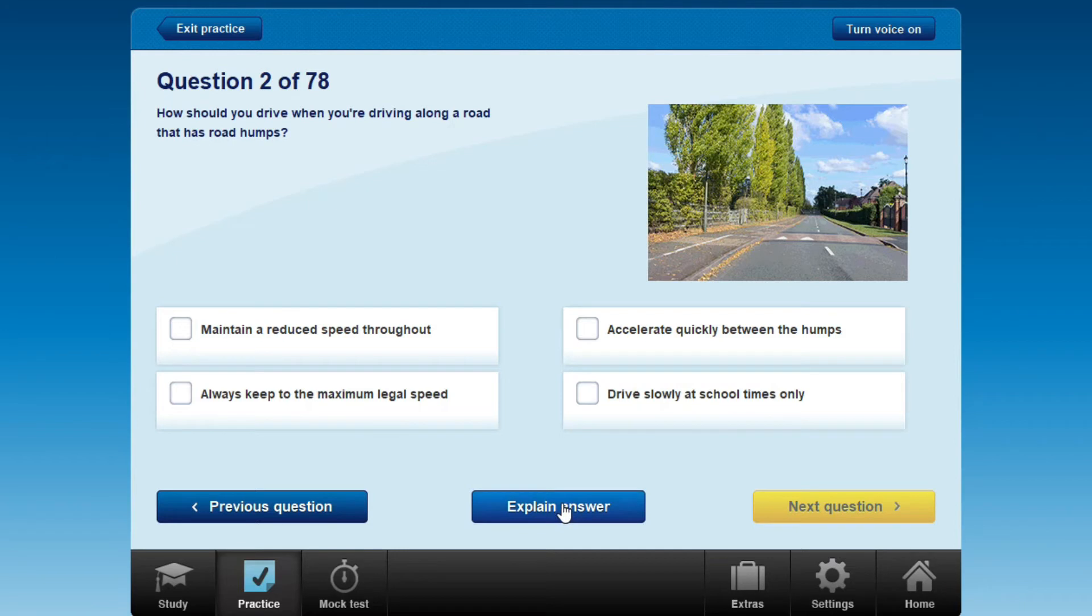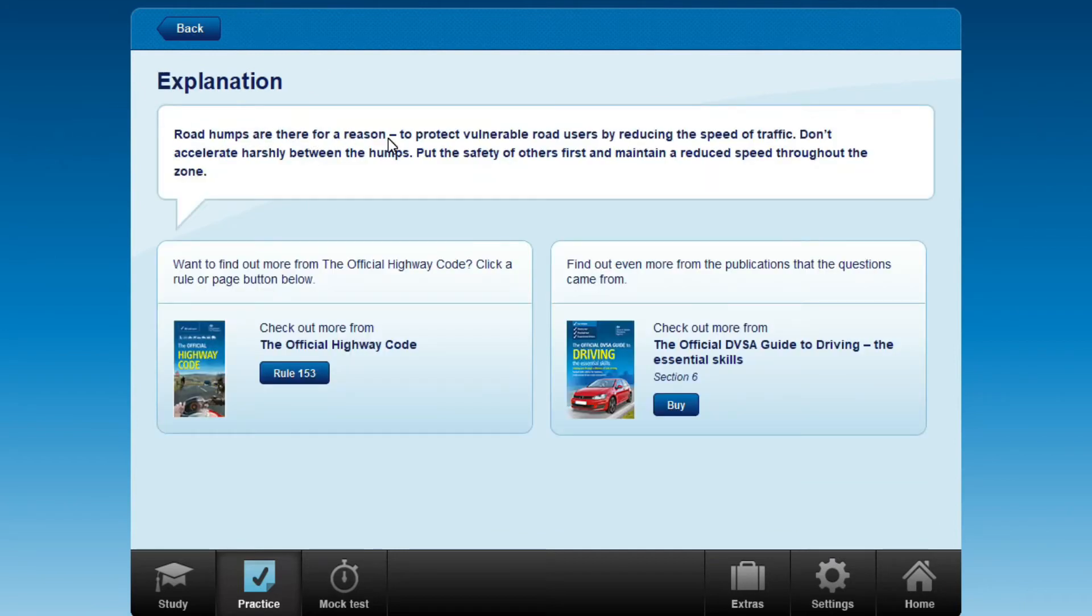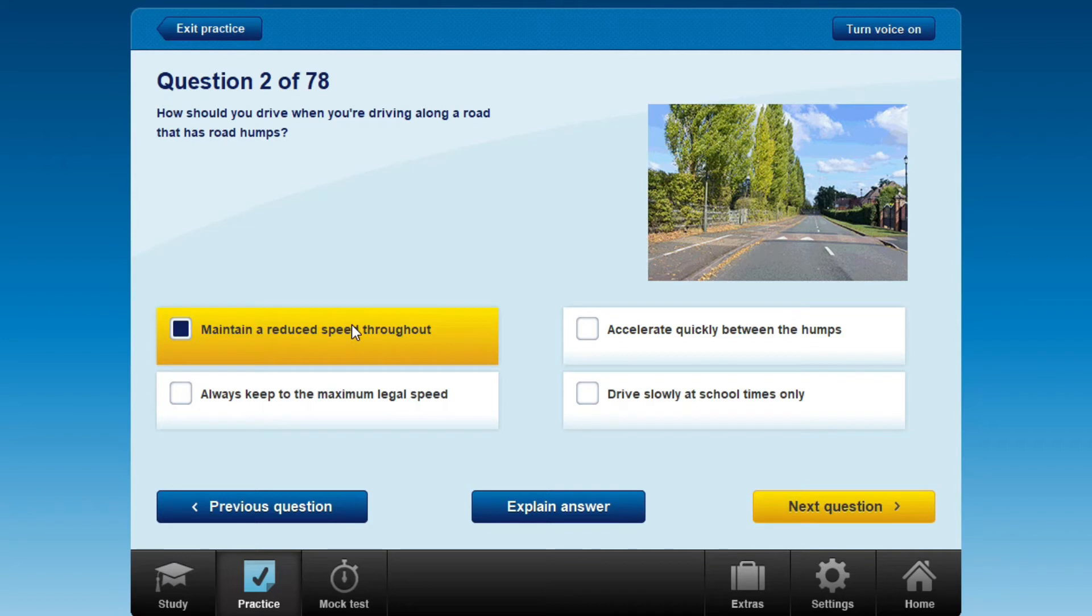Explanation: Road humps are there for a reason - the speed is reduced to protect vulnerable road users. Don't accelerate harshly between the humps. Put the safety of others first and maintain a reduced speed throughout the zone where there are road humps.